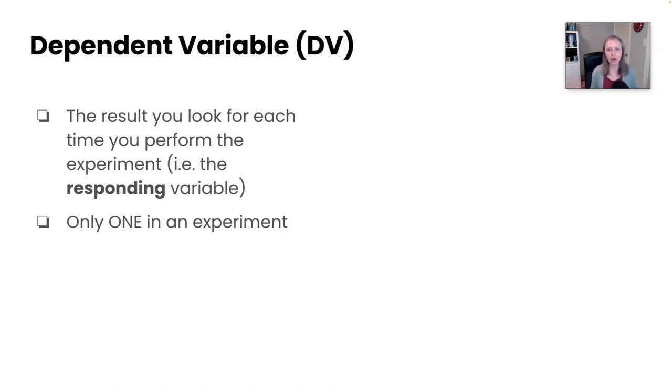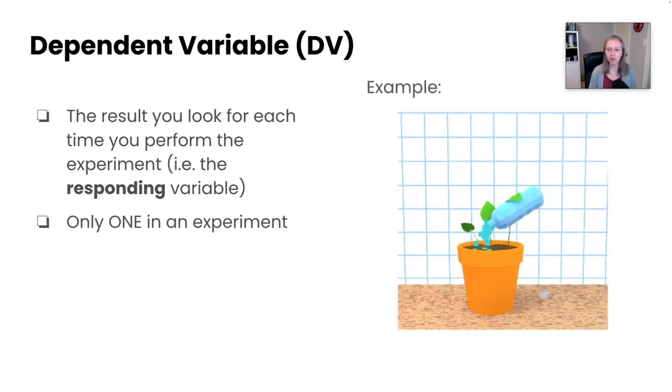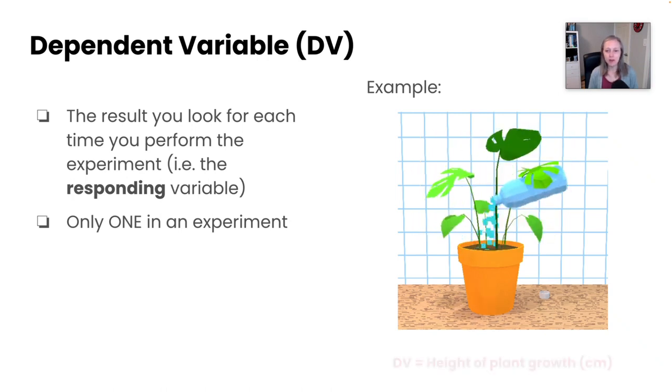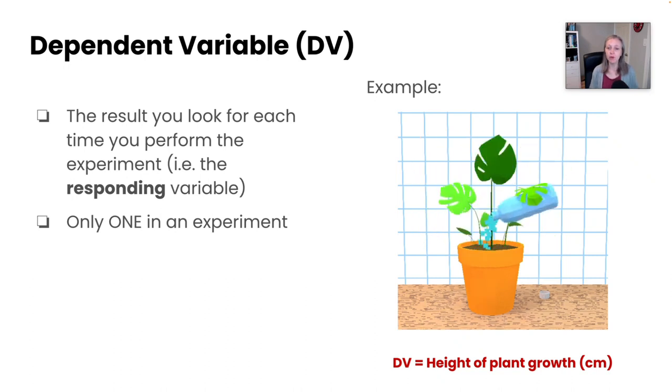Now let's go back to our example. If we're studying how the volume of water affects the growth of a plant, what would the dependent variable be? Well, in this case, the dependent variable could be the height of the plant growth. And if you wanted to quantify that, you could take a ruler and measure it in centimeters. And that would be a really great way to do that.